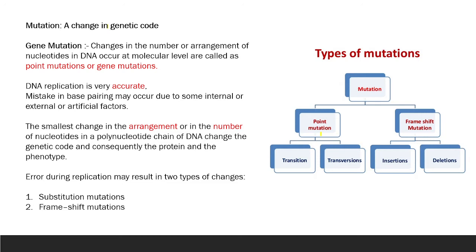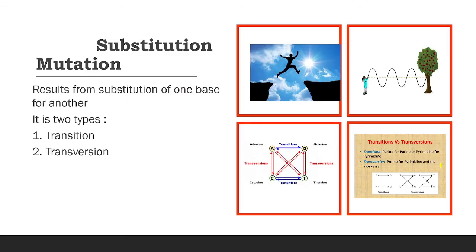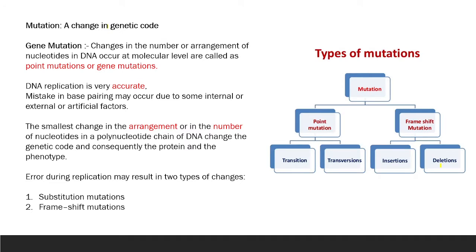DNA replication is a very accurate process, but many times a codon deletion or a base pair deletion, or an extra insertion occurs, so the reading frame changes — we call this a frameshift mutation. Point mutations include transition, transversion, and frameshift mutation with insertion and deletion, which we will see later.